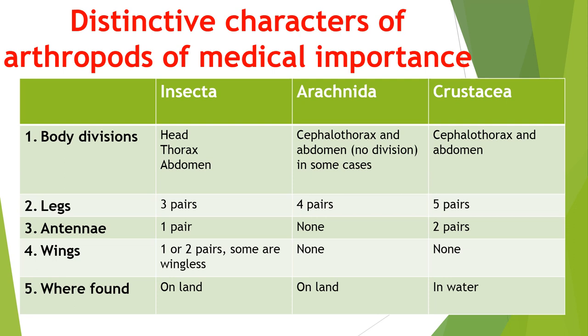Class Insecta has one pair of antennae, Class Crustacea has two pairs of antennae, and Class Arachnida has no antennae. Class Insecta has one or two pairs of wings, and some are wingless, while Arachnida and Crustacea are wingless. Only Class Crustacea is found in water, while Class Insecta and Arachnida are found on land.